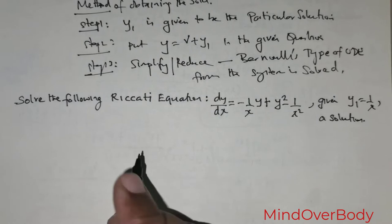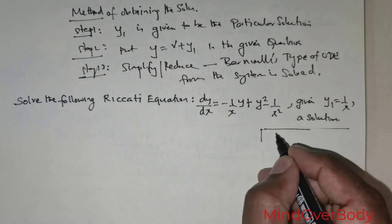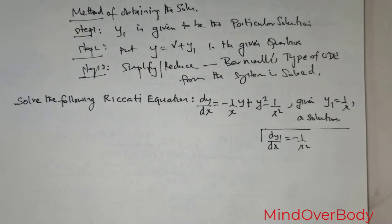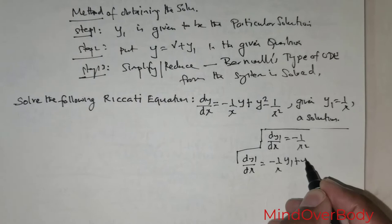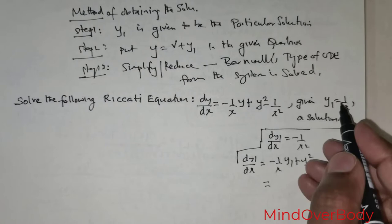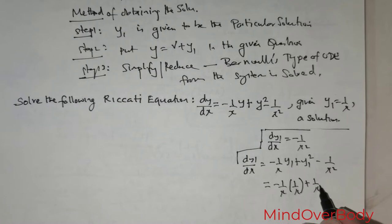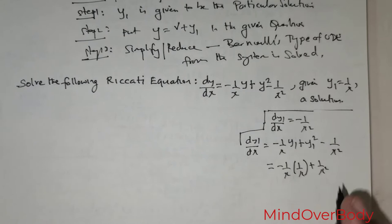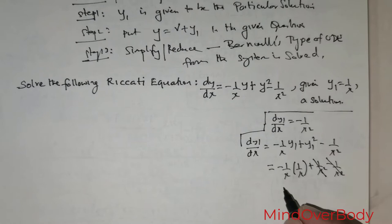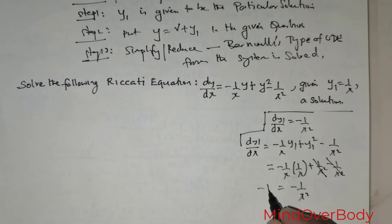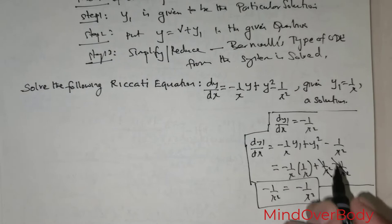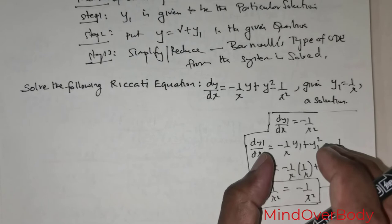This is just for your understanding — I will show that y₁ = 1/x is indeed a solution. dy₁/dx = −1/x². Substituting into the equation: −1/x times (1/x) + (1/x)² − 1/x² = −1/x² + 1/x² − 1/x² = −1/x². Left side equals right side, confirming y₁ = 1/x is a solution.